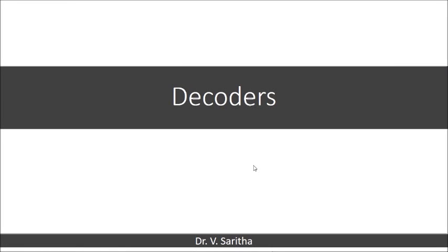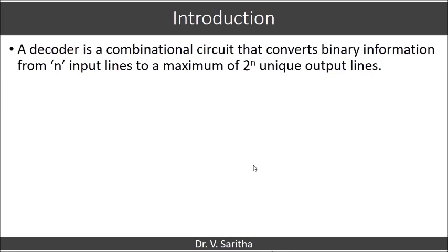In this video we are going to learn about decoders. A decoder is a combinational circuit which takes n input lines and produces 2 to the power of n output lines.